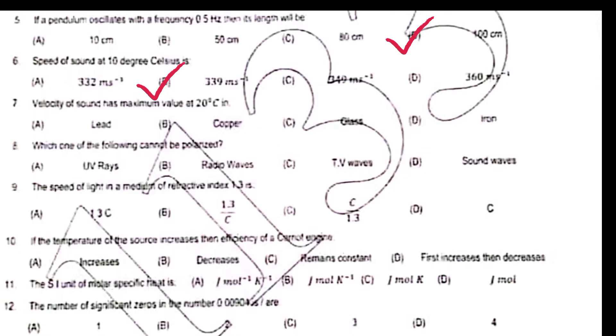If the temperature of source increases, then efficiency of a Carnot engine increases. The unit of molar specific heat is joule per mole per kelvin.